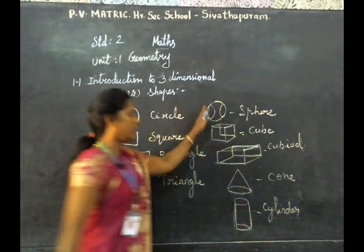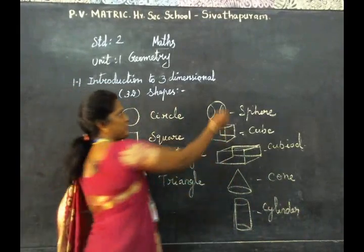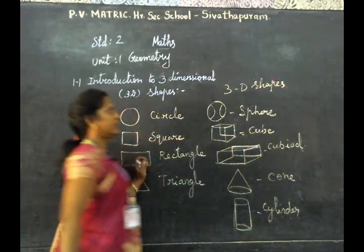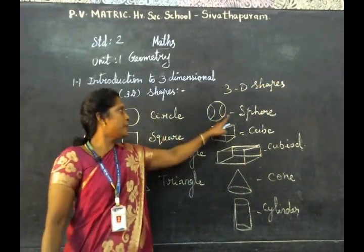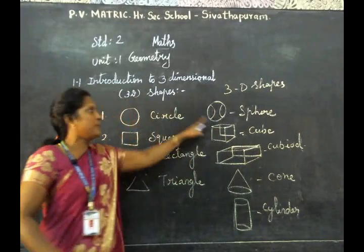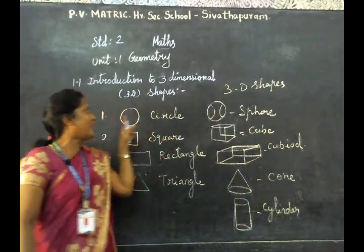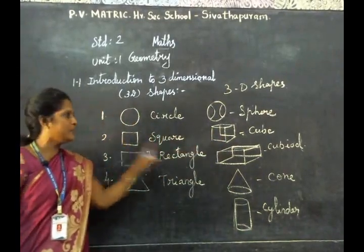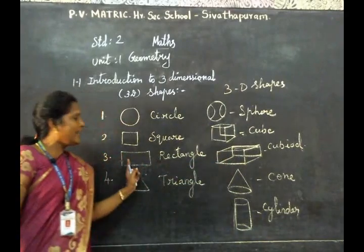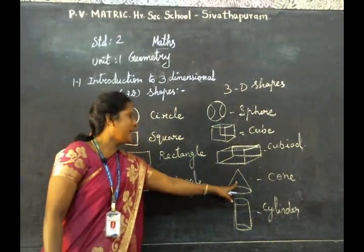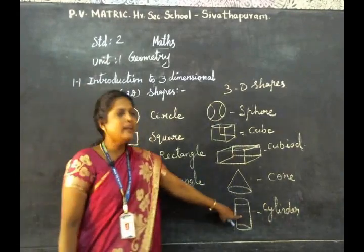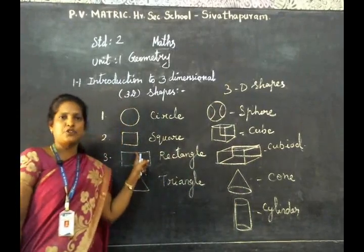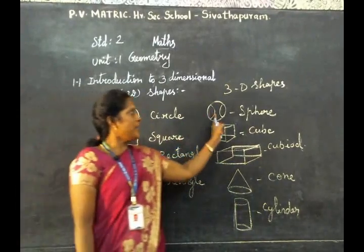This is cylinder. They are called 3D shapes. A circle shape — sphere looks like a circle shape. Cube looks like a square shape. Cuboid looks like a rectangle shape. Cone looks like a triangle shape. Cylinder also looks like a rectangle shape.